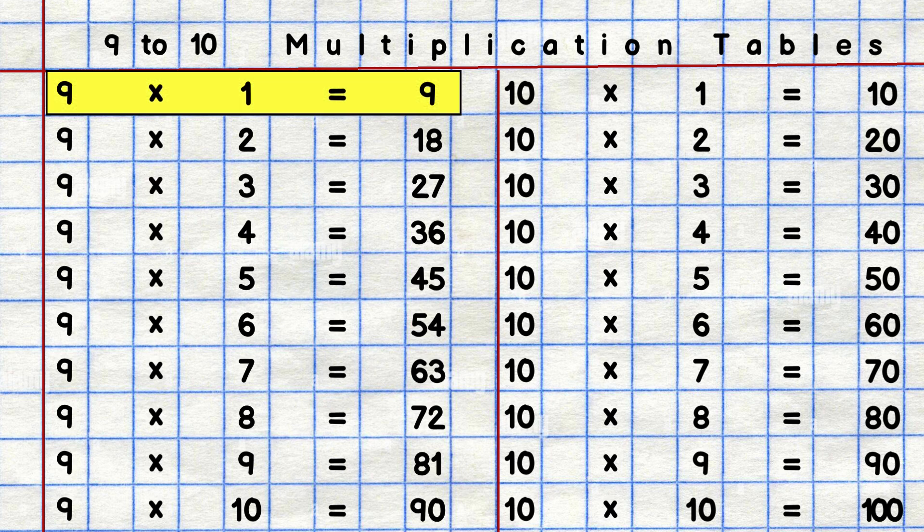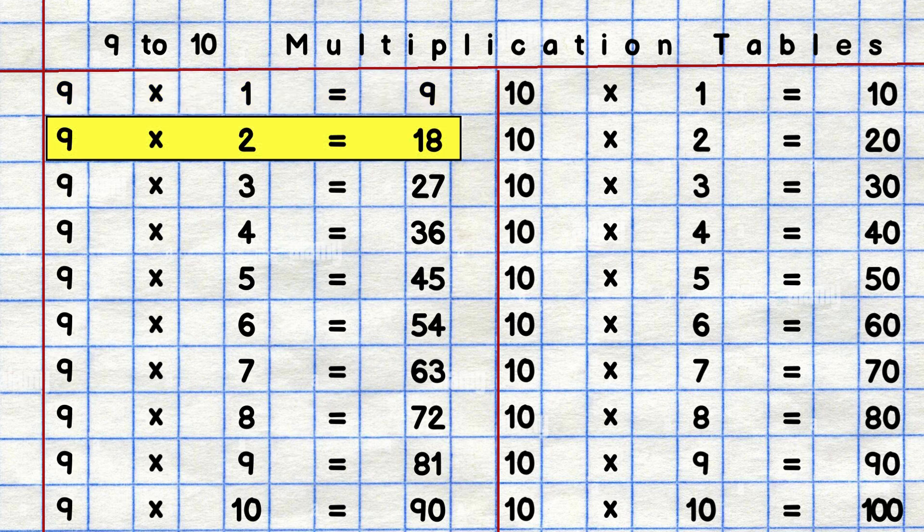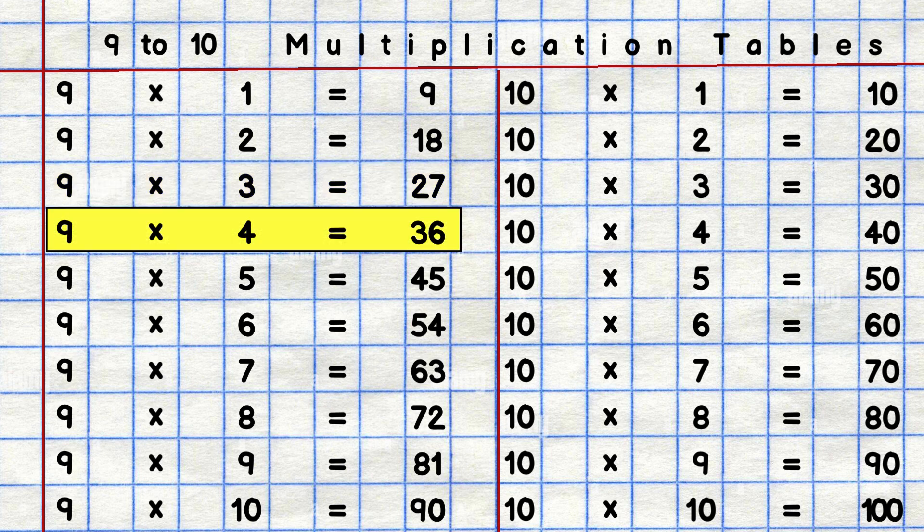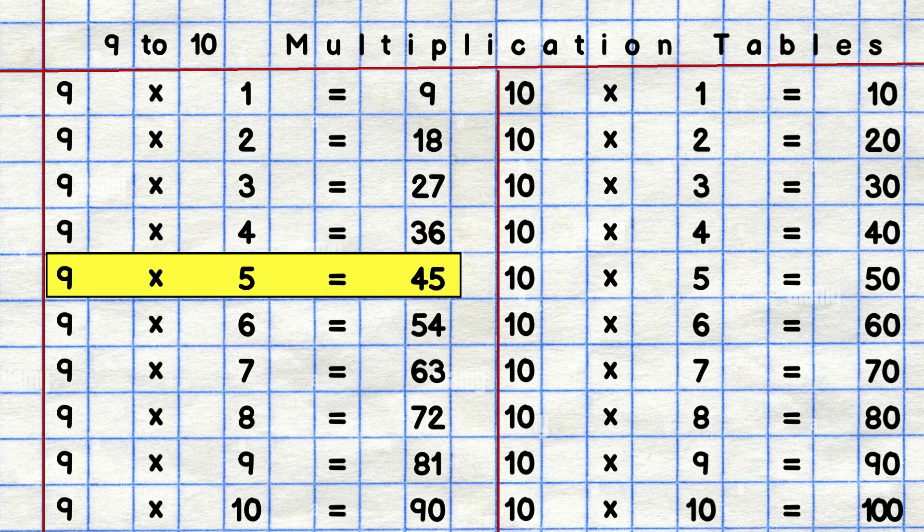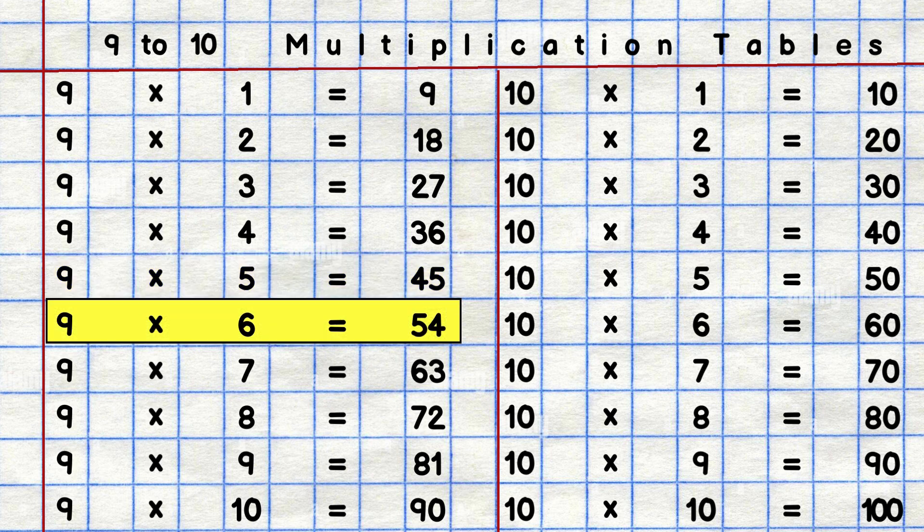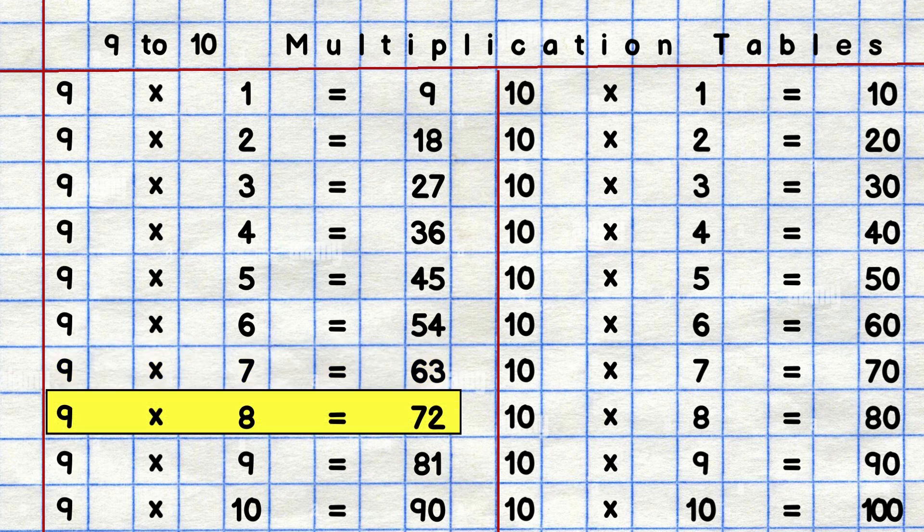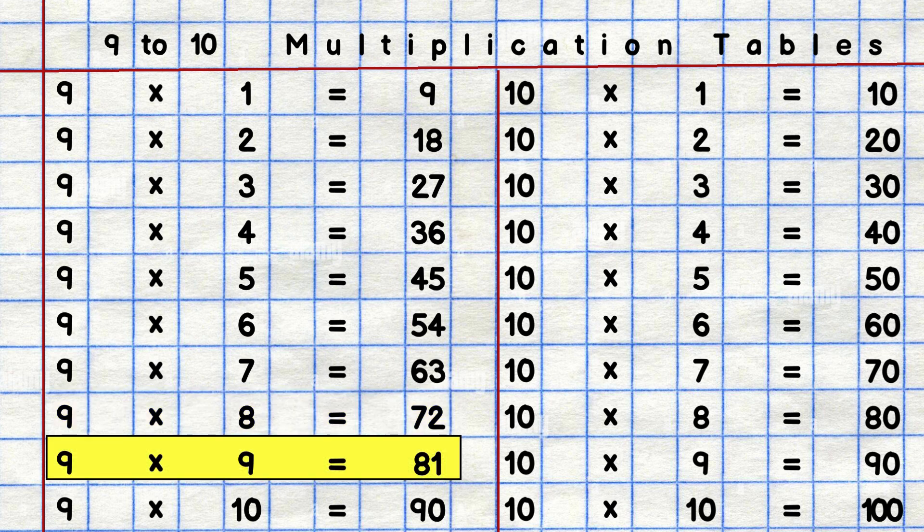9 1's are 9. 9 2's are 18. 9 3's are 27. 9 4's are 36. 9 5's are 45. 9 6's are 54. 9 7's are 63. 9 8's are 72. 9 9's are 81. 9 10's are 90.